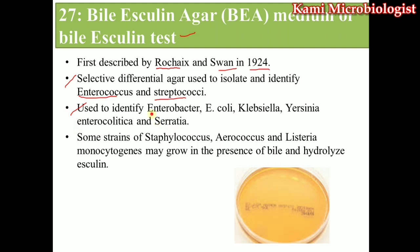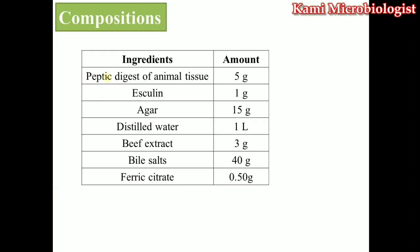This media is also used for the growth of Enterobacter, E. coli, Klebsiella, Yersinia enterocolitica, and some other strains like Staphylococcus, Aerococcus, and Listeria monocytogenes. These bacteria can also grow because this media contains bile as well as esculin, and due to the presence of these, Staphylococcus and Listeria monocytogenes can also grow.